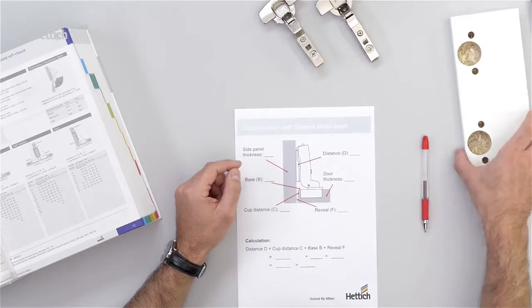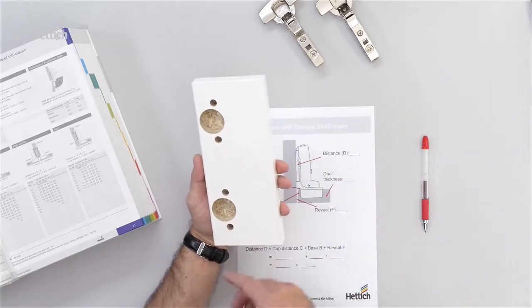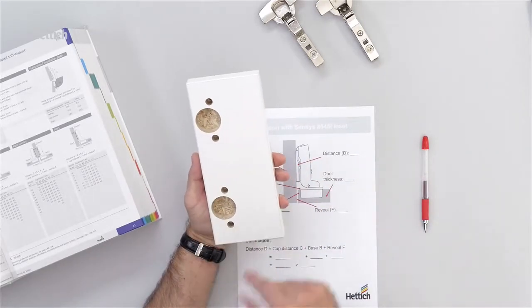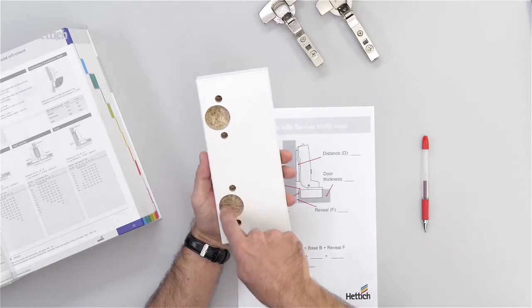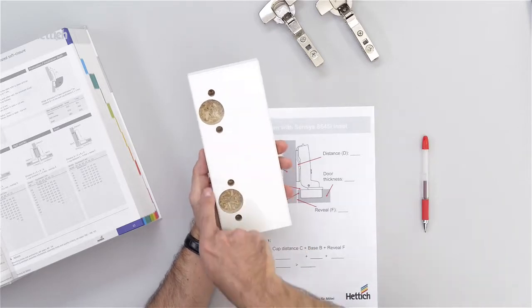The values show the cup distance C, which is the distance between the cup hole drilling and the edge of the door.